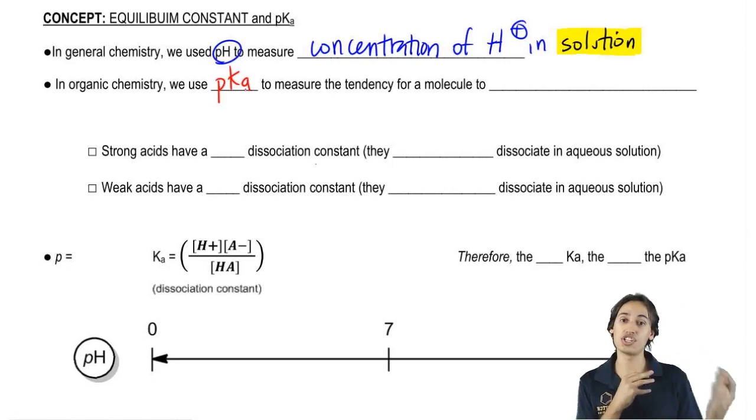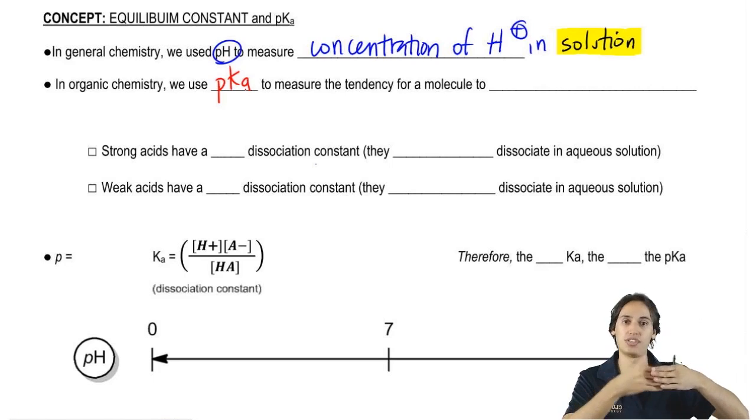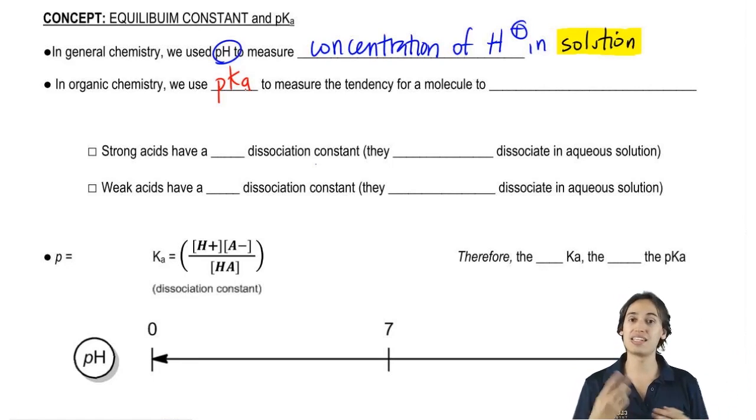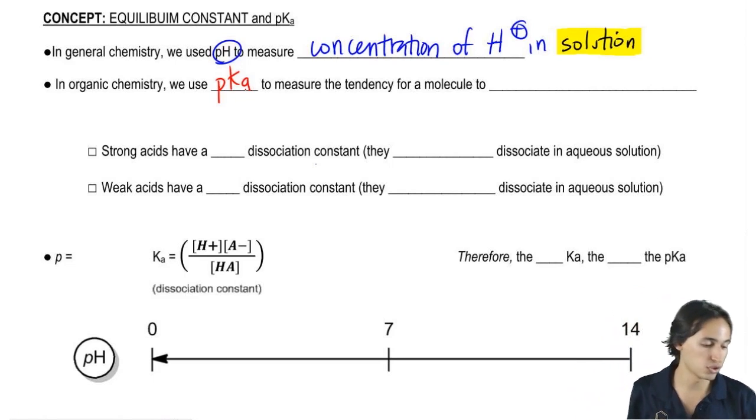We're going to use the negative log of the equilibrium constant, or the dissociation constant. Remember that the dissociation constant has to do with how likely a bond is to break. So we're going to use the negative log of how likely that is to happen to figure out the tendency of a molecule to donate protons.